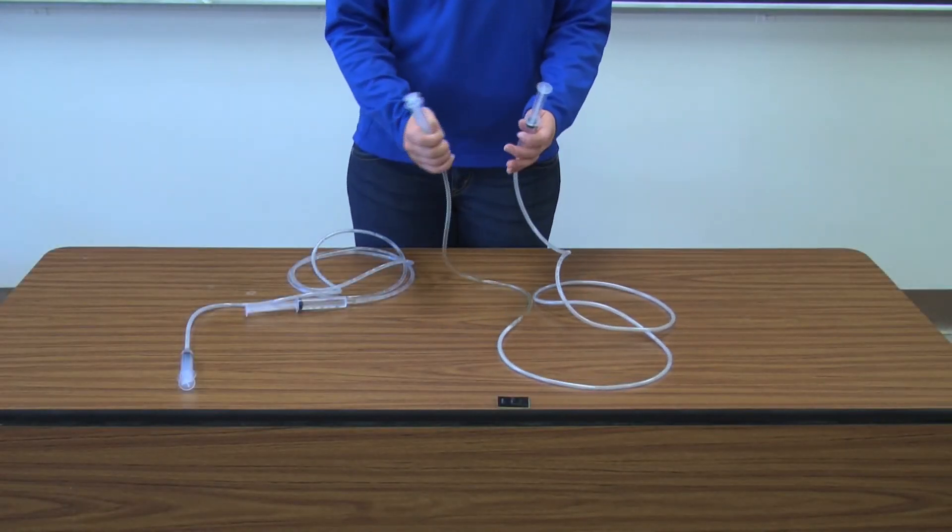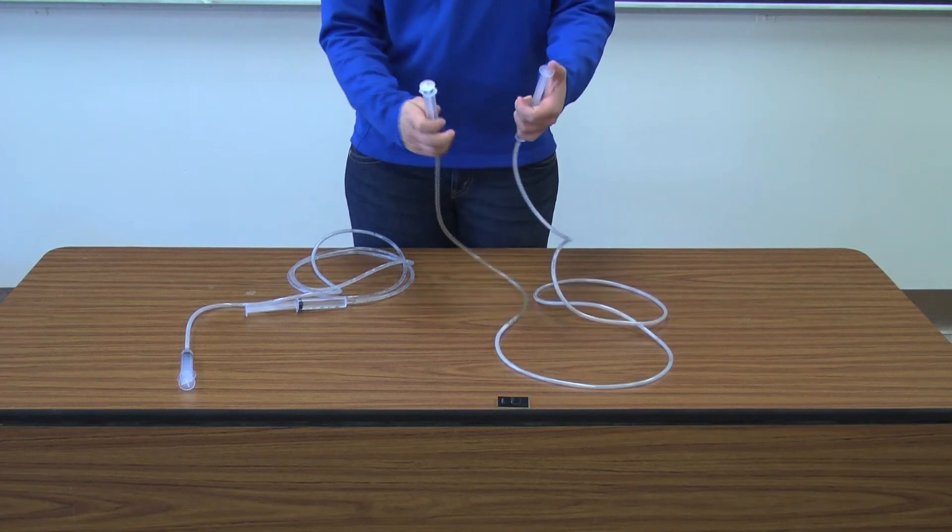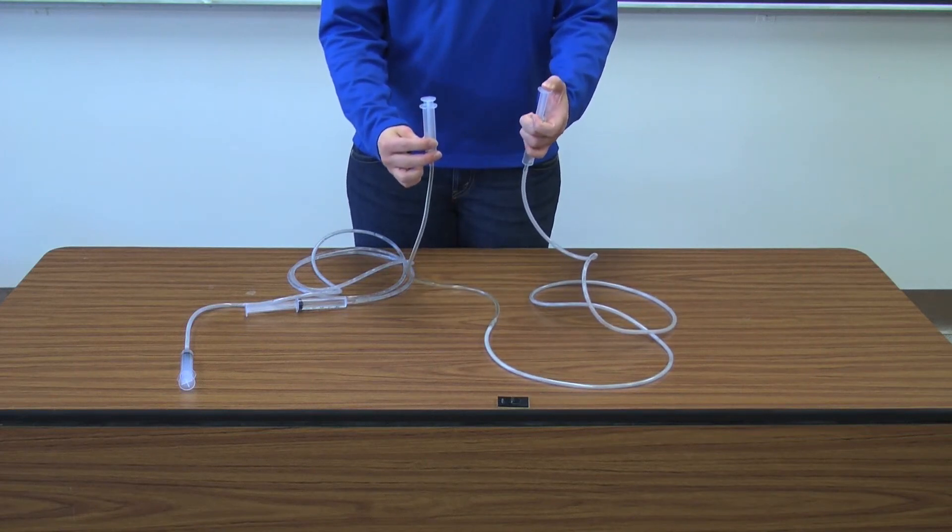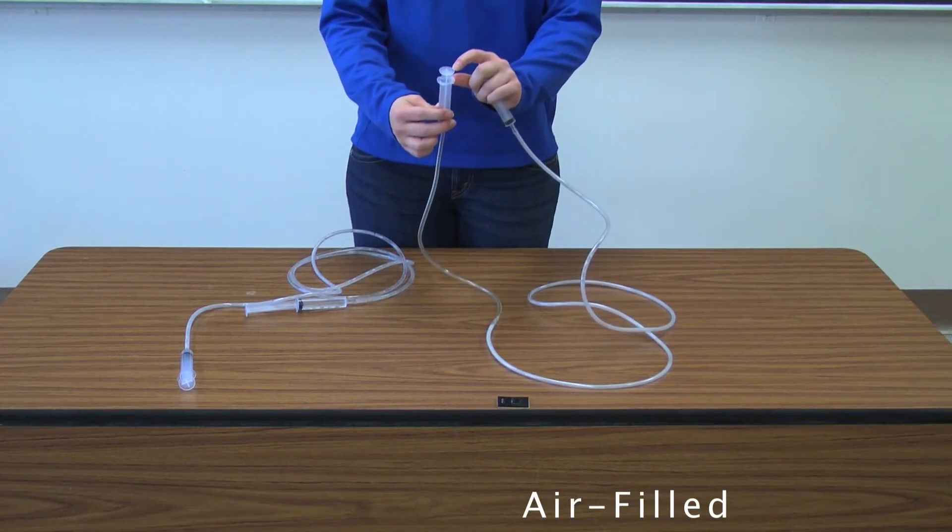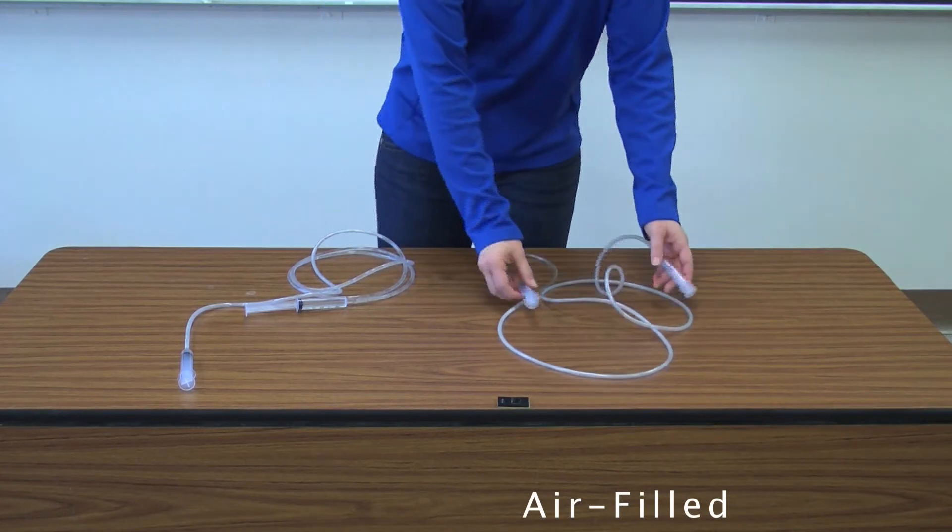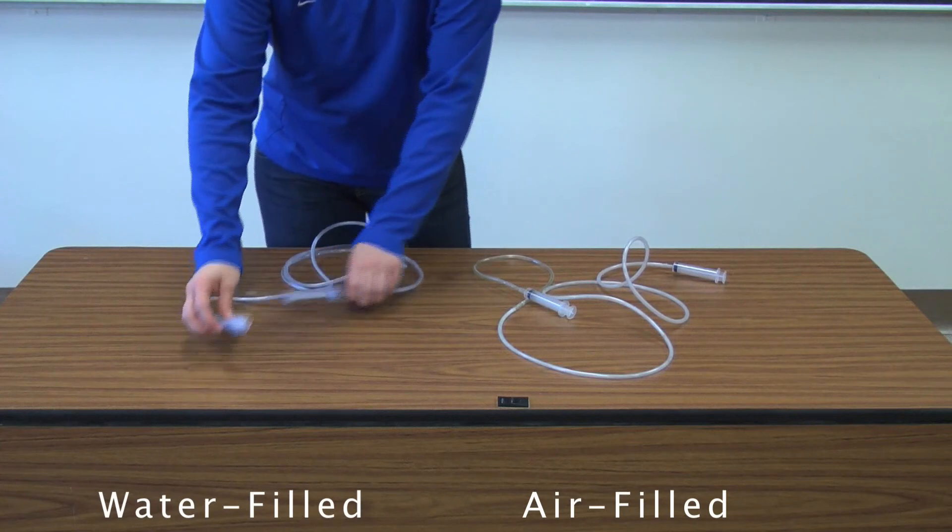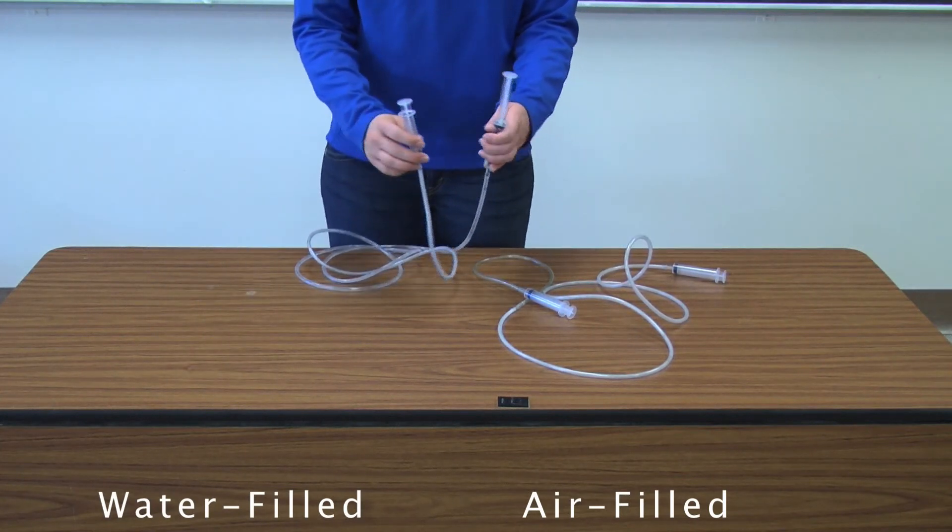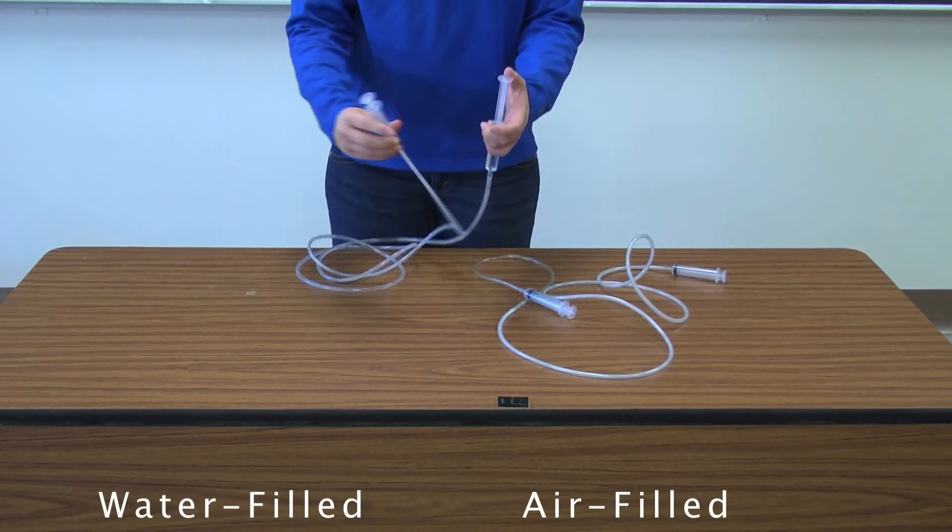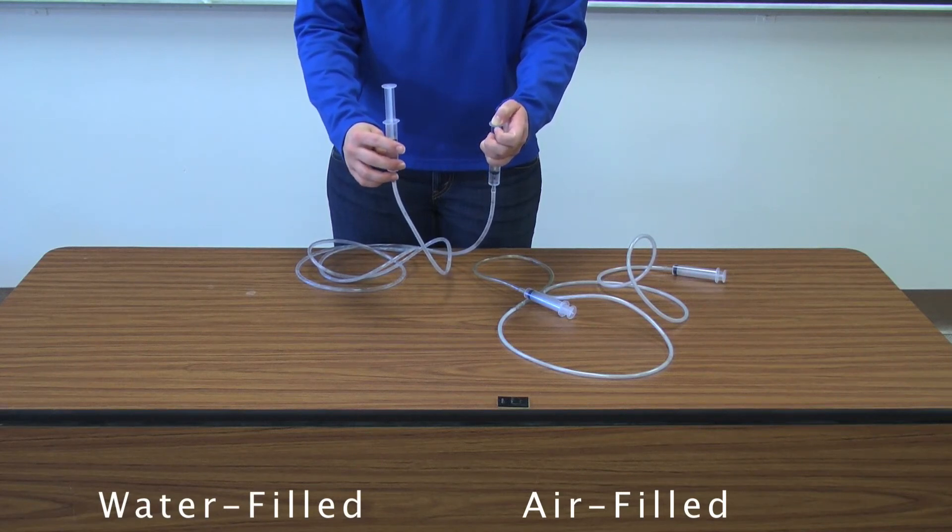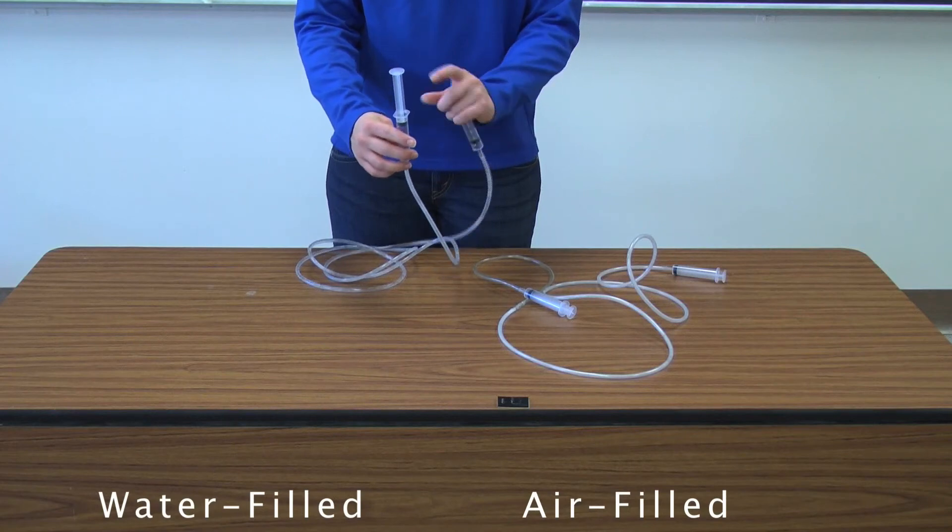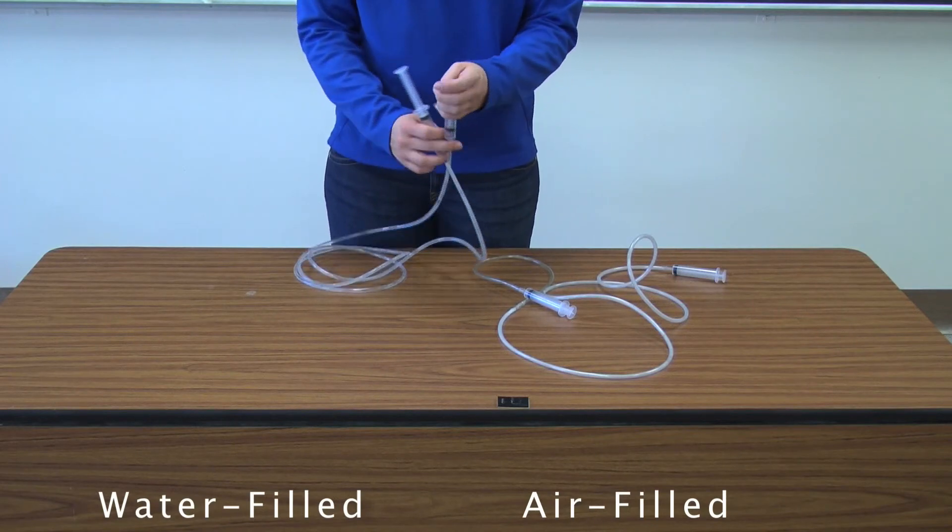Show the class the longer tube that you made and ask them to predict what will happen. Show them the air-filled syringe and then the water-filled syringe. If they learned correctly from the last activity, they will predict that the water-filled syringe will work just as well as before, whereas the air-filled syringe will work much slower, if at all.